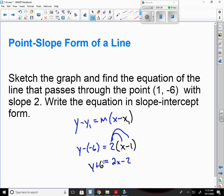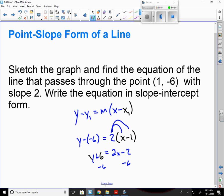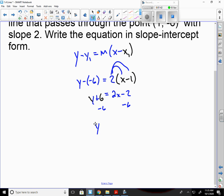Negative minus a negative 6 becomes a positive 6. And now to put it back in slope intercept form, I have to get the y by itself. So I subtract the 6 over. And I'm left with y equals 2x minus 8. And that's my final answer.